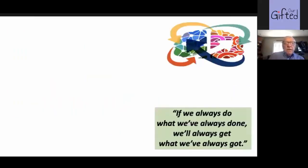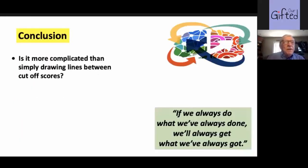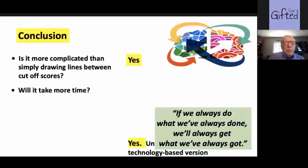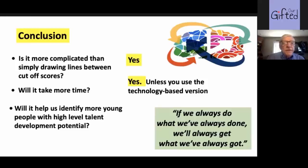Conclusion — I love this quotation: if we always do what we've always done, we'll always get what we've always got. Is it more complicated than simply drawing lines between cutoff scores? The answer is absolutely yes. Will it take more time? Yes, unless you use the technology-based version. Will it help us identify more young people with high levels of talent potential? And the answer to that is yes. Our research over the years has really shown this. We've had some remarkable kids, as you're going to see in the next couple of examples.